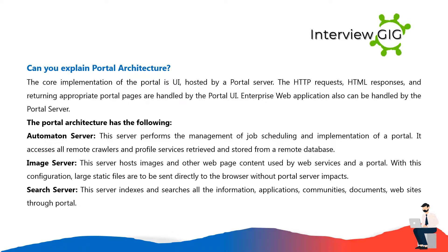The core implementation of the portal is a UI hosted by a portal server. HTTP requests, HTML responses, and returning appropriate portal pages are handled by the portal UI enterprise web application. The portal architecture includes an Automaton Server which performs management of job scheduling and implementation of a portal. It accesses all remote crawlers and profile services retrieved and stored from a remote database. The Image Server hosts images and other web page content used by web services and the portal, allowing large static files to be sent directly to the browser without portal server impact.